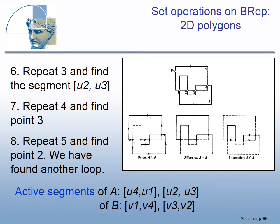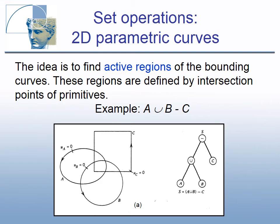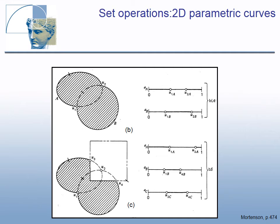Finally, the active segments making the resulting boundary are determined — using V1 instead of U1 in B because it has its own parametrization. For two-dimensional solids bounded by parametric curves, the idea is still to find active regions of the bounding curves, defined by intersection points. For example, A union B subtract C — with union of two disks and a subtracted square region — we first find active segments for the two disks' union shown in bold, then subtract the square to find the active segments for the final result.